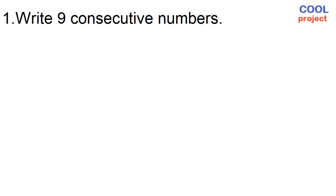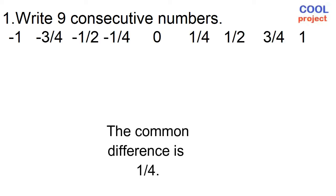Number 1: Write 9 consecutive numbers. For example: negative 1, negative 3 fourths, negative 1 half, negative 1 fourth, 0, 1 fourth, 1 half, 3 fourths, 1.